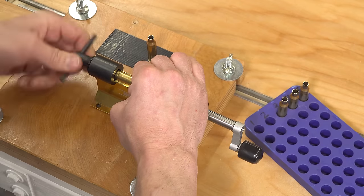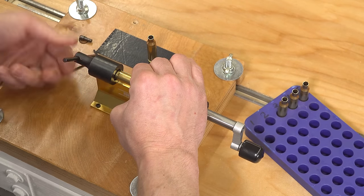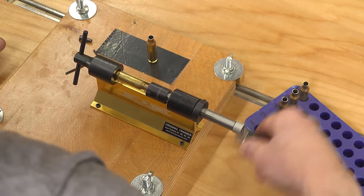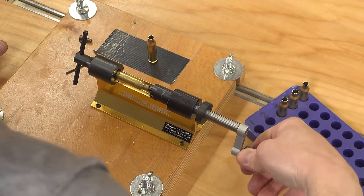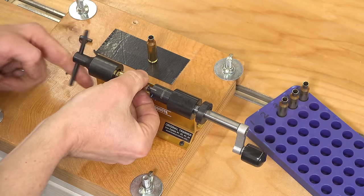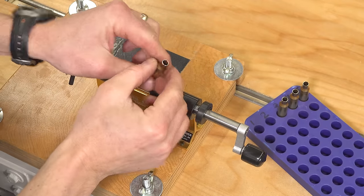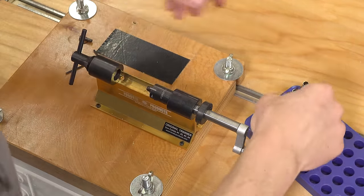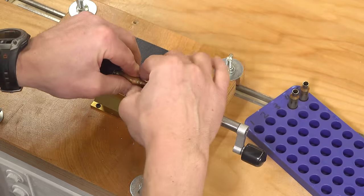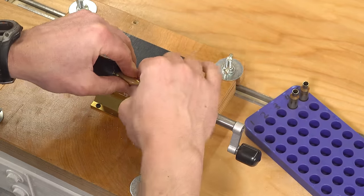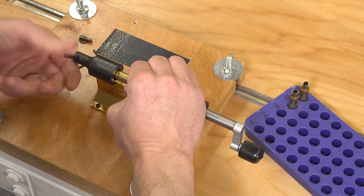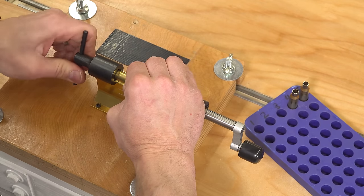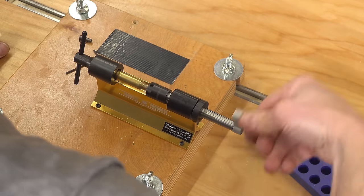Support the front, clamp the collet, and trim. Look at that. Now we're doing multiple steps in one pass and it's always great to save time in that way if you can. Efficiency. And it puts a really nice chamfer on that case mouth.